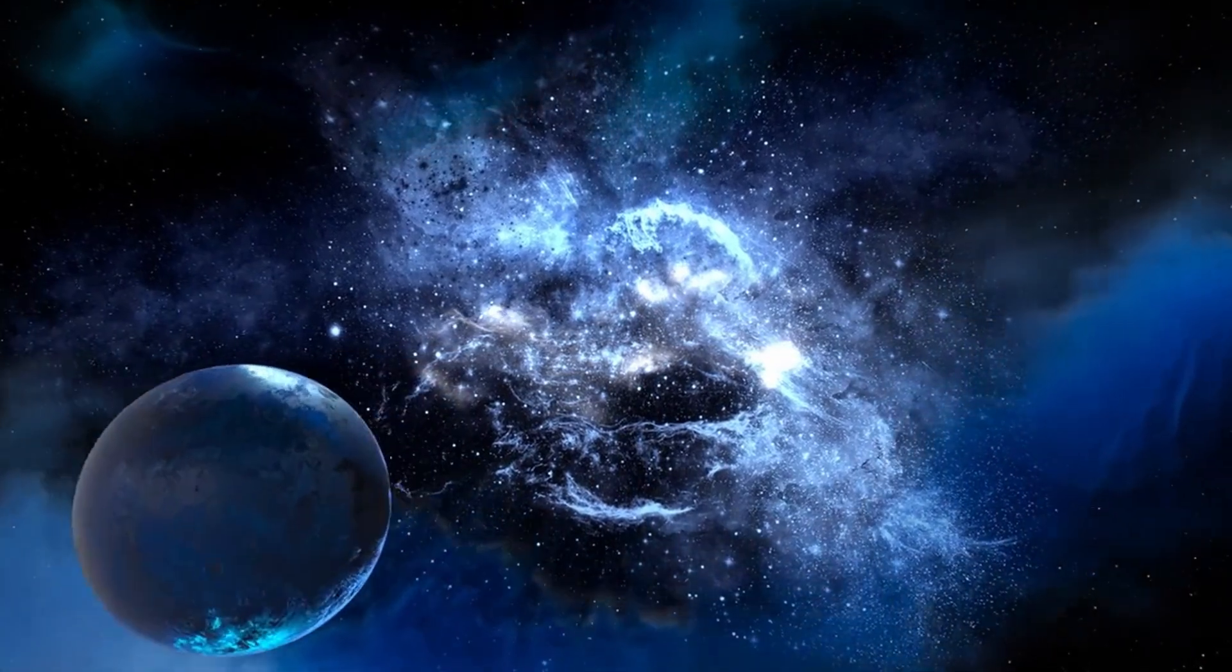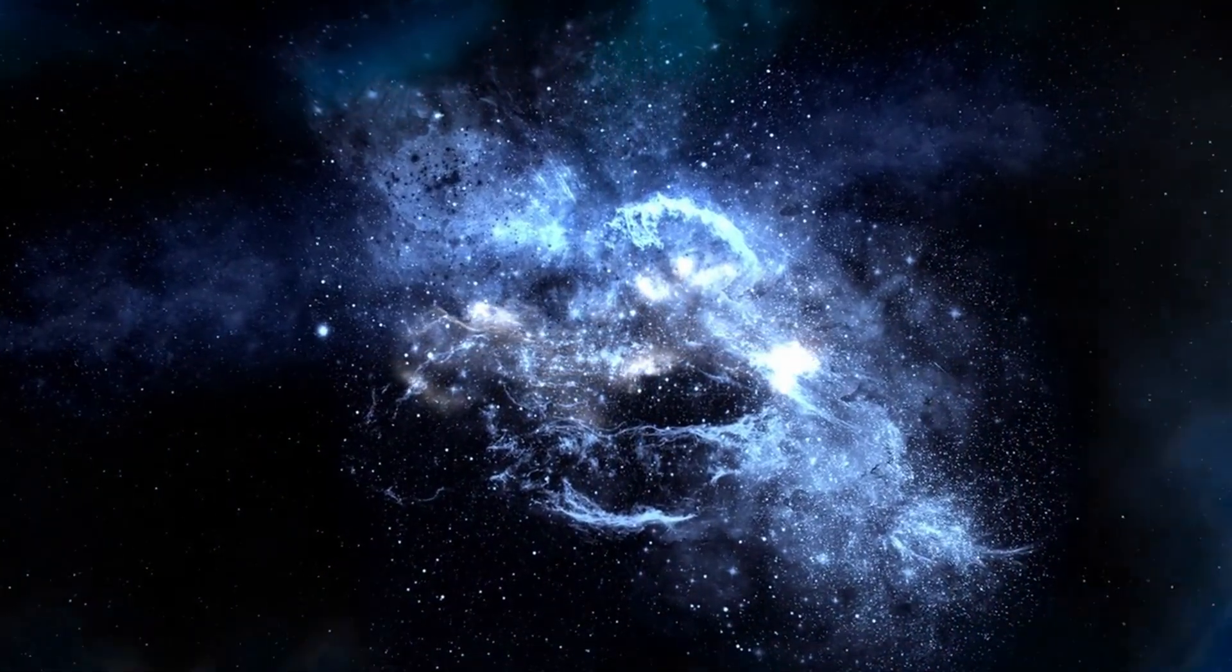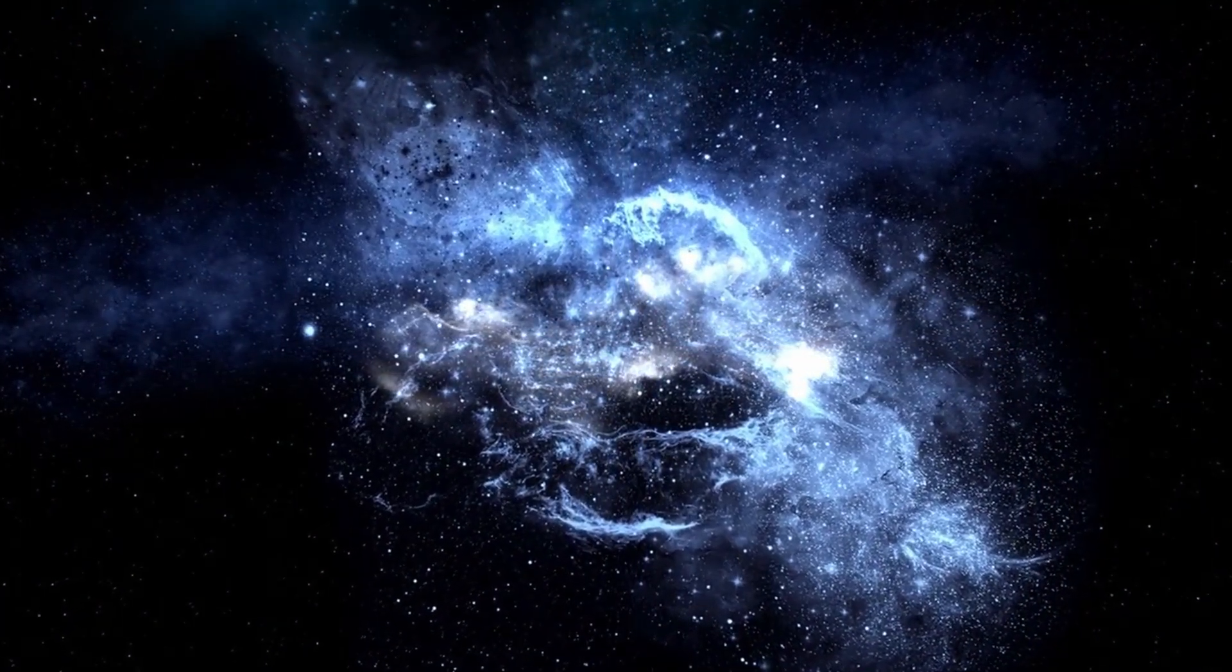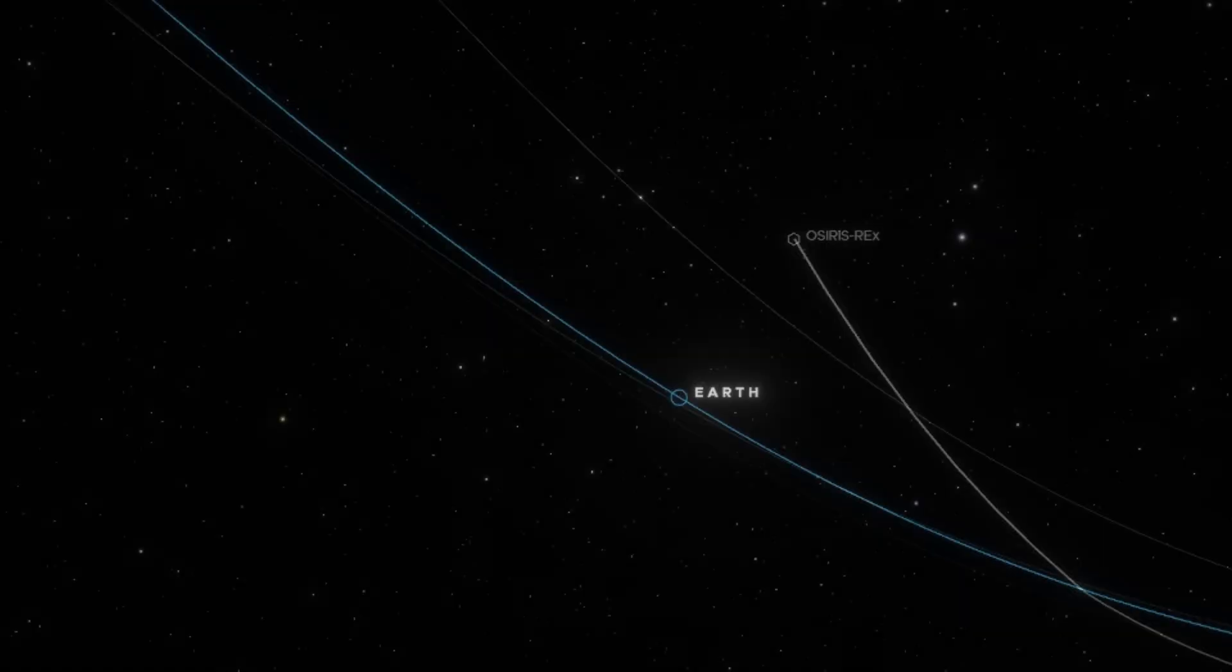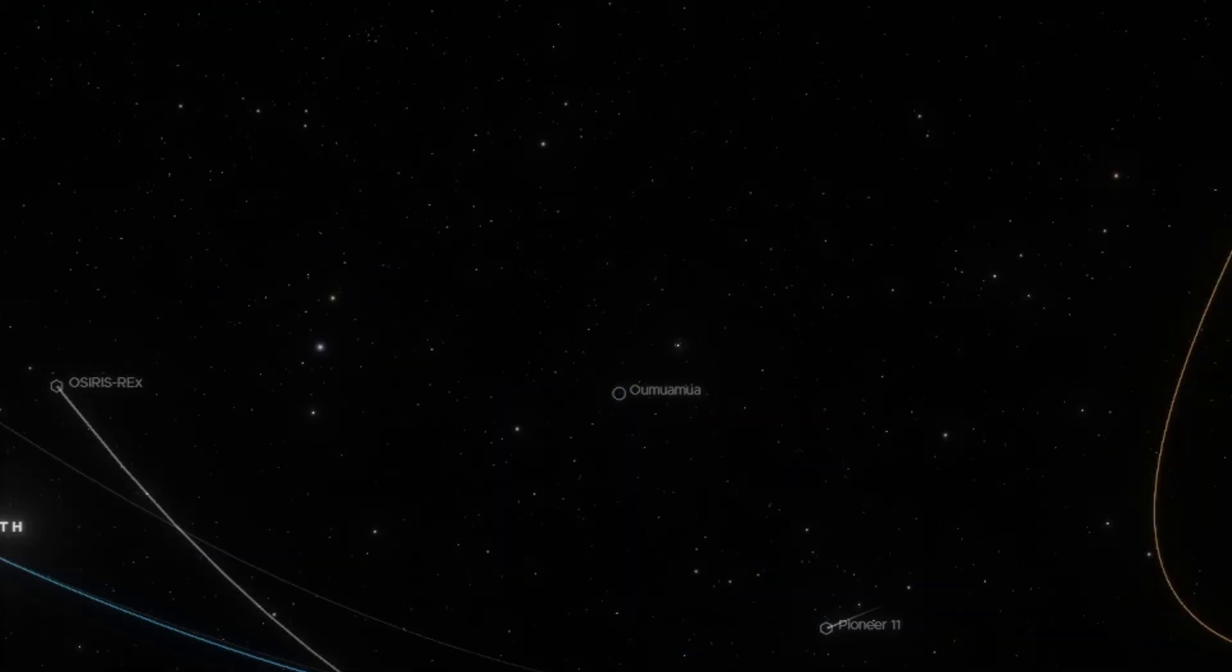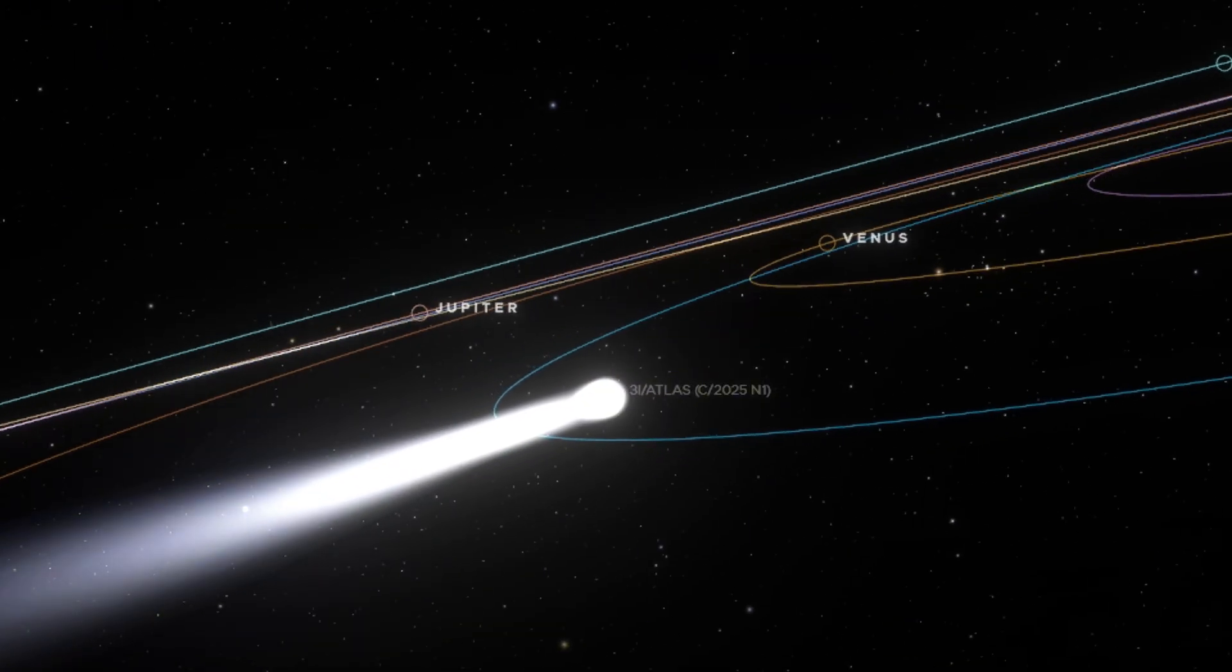Yet the timing is impossible to ignore. After millennia of silence, we've had three anomalous interstellar objects in less than a decade. Oumuamua in 2017, Atlas now, and SWAN arriving simultaneously.